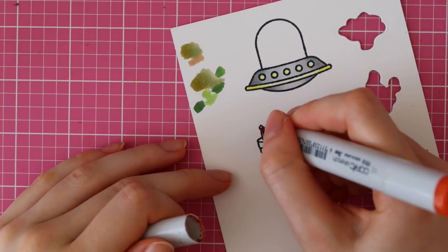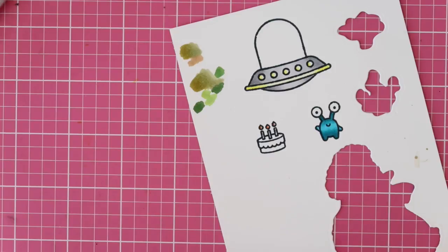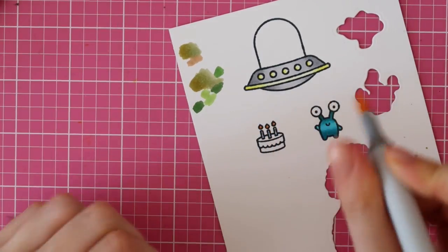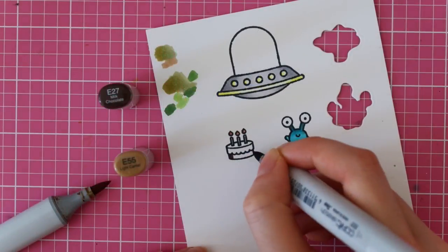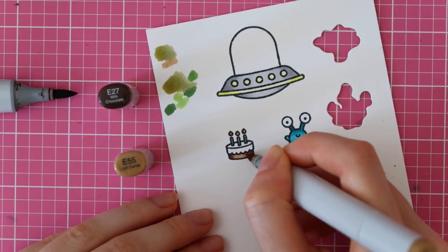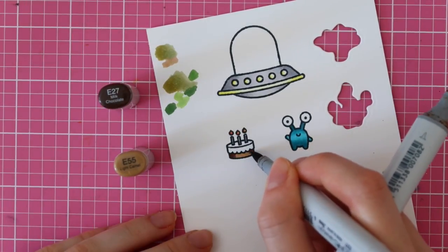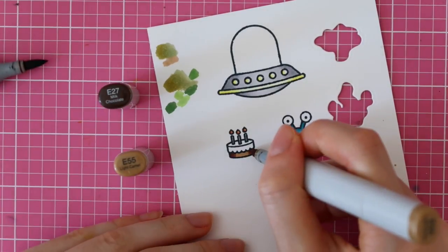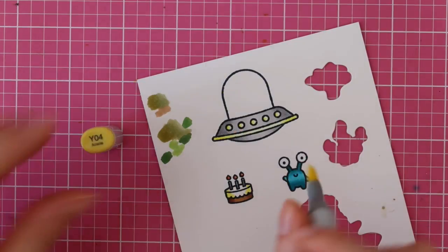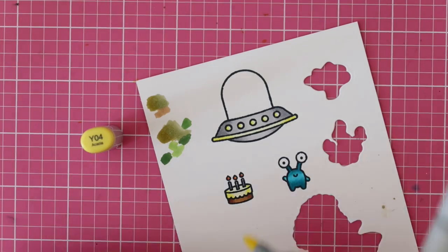Then for the birthday cake, I'm using YR18 and YR21 to color the candles first. Then for the bottom part of the cake, I'm using E27 and E55 since I wanted this cake to look like a chocolate cake. Then for the top of the cake, I'm using the same yellow colors that I used for the spaceship, so I'm using Y04 and Y000.